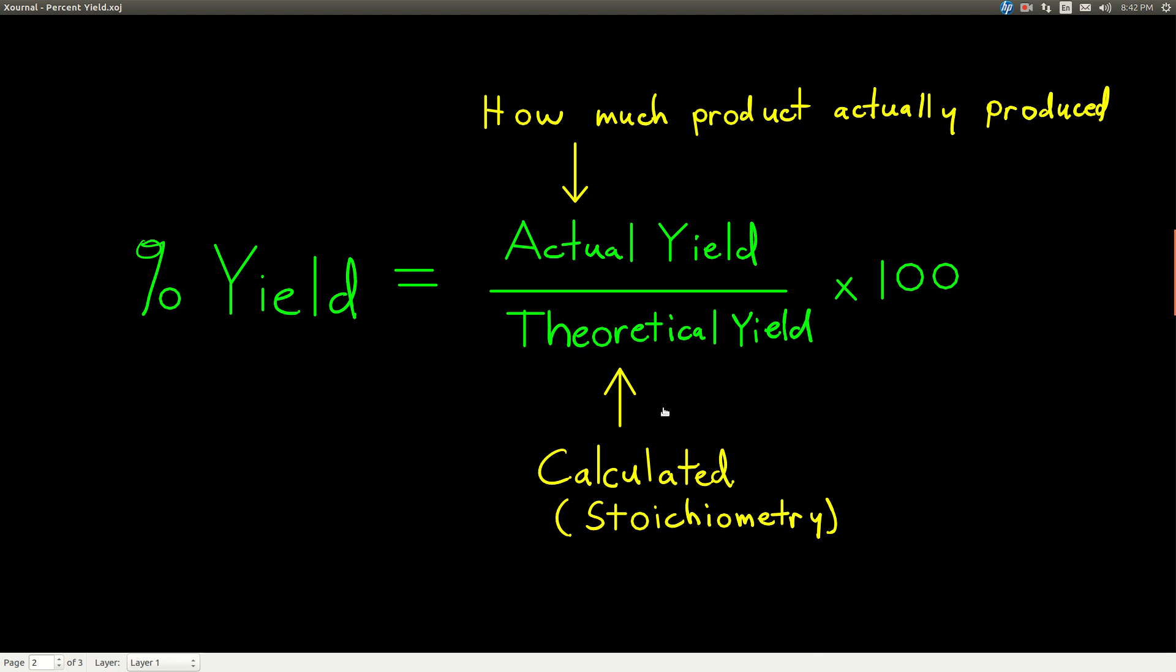Now, in the laboratory, nothing ever goes perfectly. Sometimes for reasons that you cannot control, sometimes there is no way to get 100% yield. But for one reason or the other, you normally don't get as much as you calculate you should get.